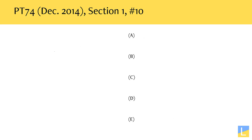Next up is PT 74, section one, number 10. Pause the video, try the problem on your own, and come back when you're done. This question prompt is asking us to strengthen the argument in the stimulus. There's going to be a principle which we can accept as a premise, and there's going to be an application, which in this case is a conclusion. We want an answer that's going to help us say that this principle does in fact allow us to reach this conclusion. Here's how I've broken down the principle.